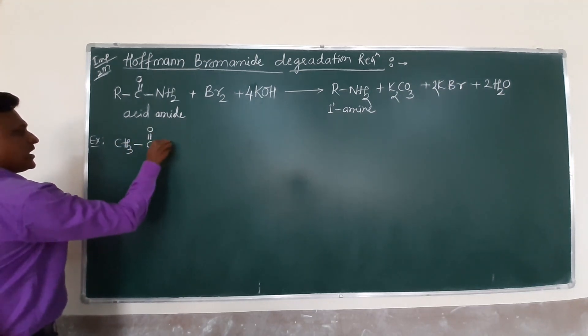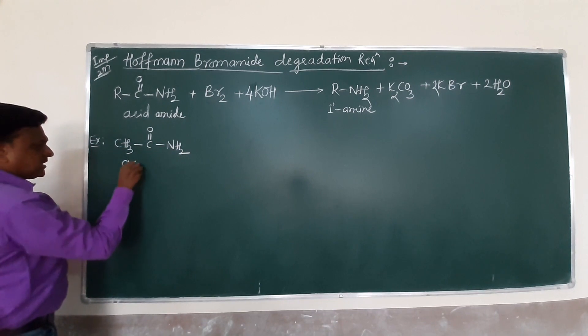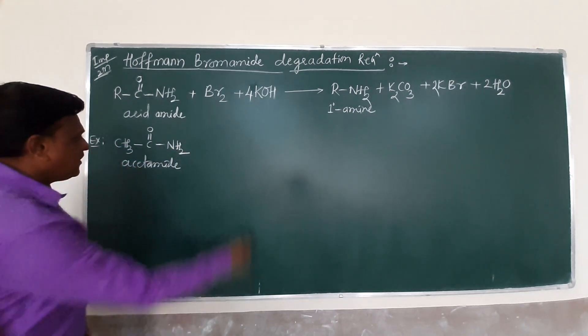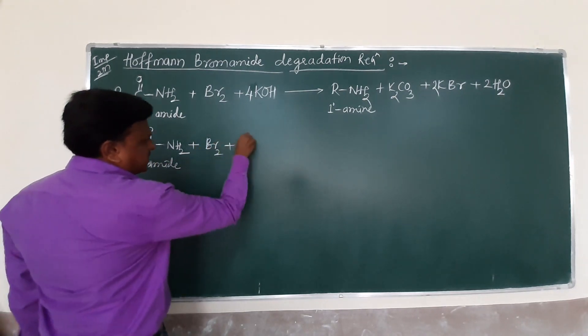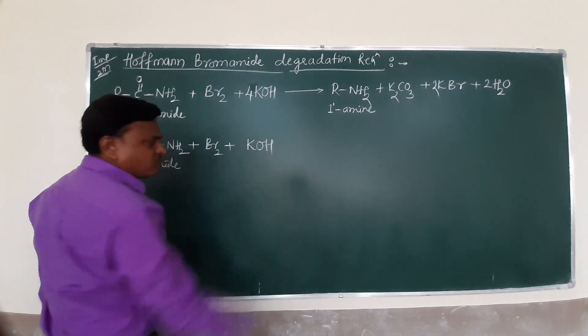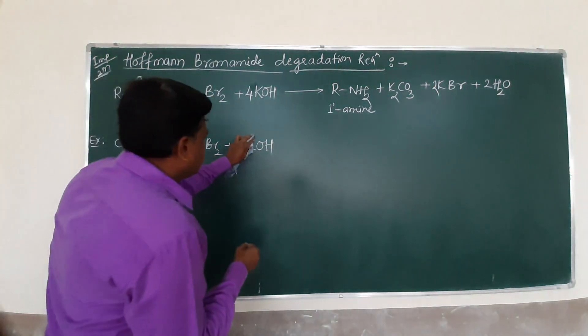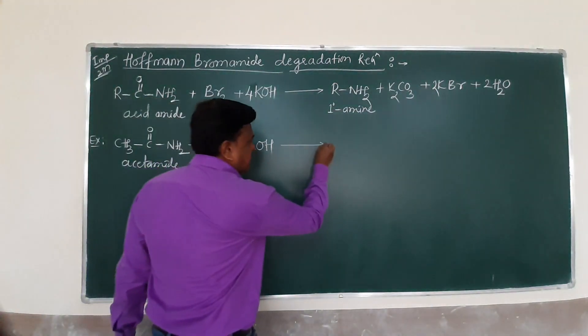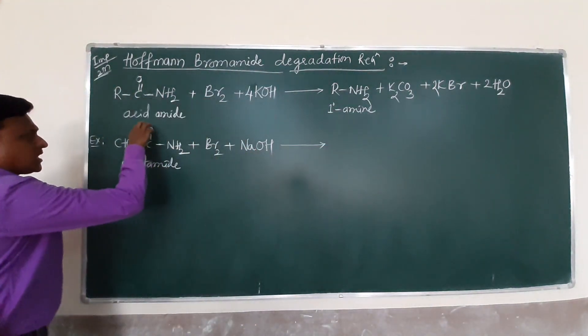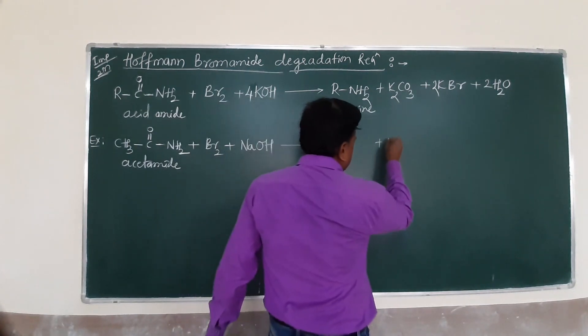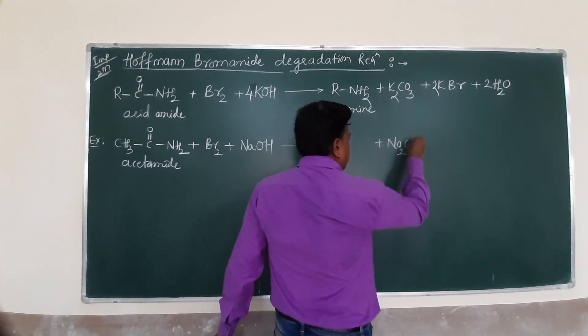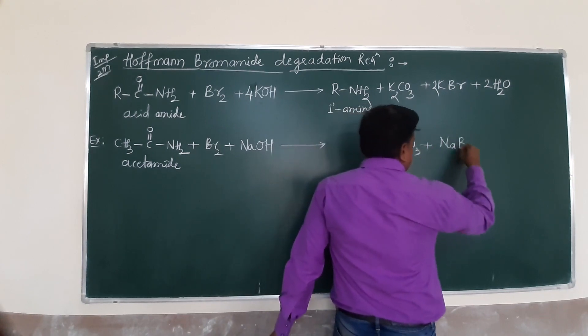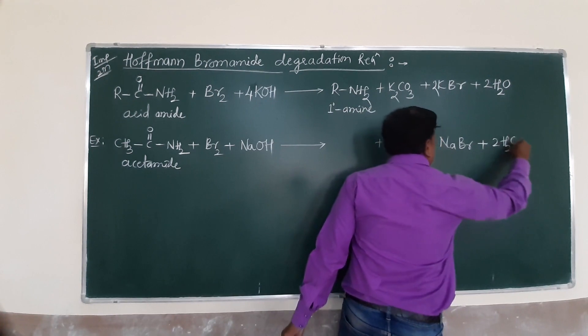If you change here KOH to NaOH in the place of KOH, the compounds are sodium carbonate and sodium bromide. This is the general reaction of Hoffman. Based on this we can prepare many different compounds. This is CH3-CO-NH2, you know this is your acetamide. Acetamide undergoes bromination in presence of alkaline medium.